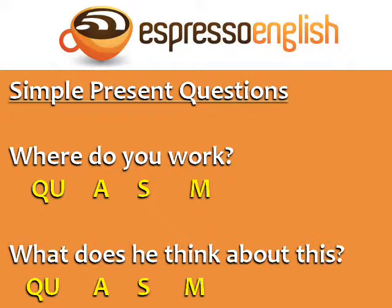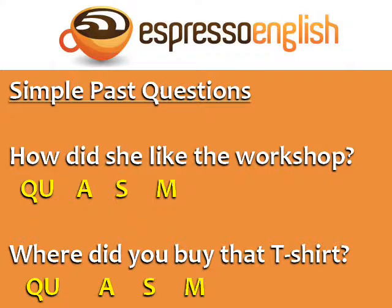Simple present questions: 'Where do you work?' Here, 'where' is the question word, 'do' is the auxiliary verb, 'you' is the subject, and 'work' is the main verb. Another example: 'What does he think about this?' In this case the auxiliary verb is 'does' because the subject is 'he'.